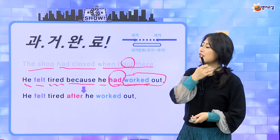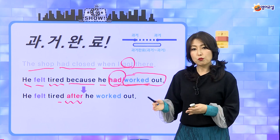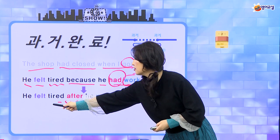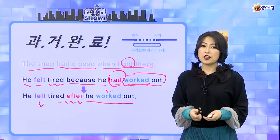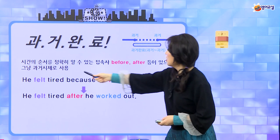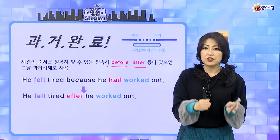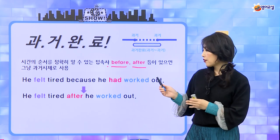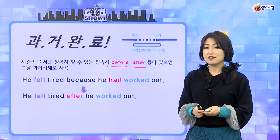그런데 이걸 그냥 과거로도 쓸 수 있어요. 어떻게 쓰냐면 'He felt tired after he worked out.' — 그가 운동한 이후에 피곤함을 느꼈어. 이렇게 쓸 거면 둘 다 과거 완료 없이 동사의 과거형으로만 쓸 수 있어요. 시간의 순서를 정확히 알 수 있는 접속사, before나 after가 있으면 그냥 과거 시제를 순서대로 사용하면 돼요. 하지만 그렇지 않으면 과거 완료를 먼저 일어난 일에 쓰고 그 다음에 일반 과거 형태로 쓰면 되는 거예요.